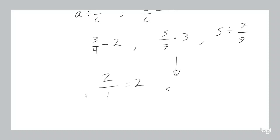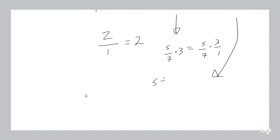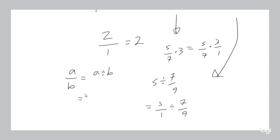So take five over seven times three — that's just five over seven times three over one. How about five divided by seven over nine? That's just five over one, divided by seven over nine. With that second trick, and what we talked about before, you can do any operation with any fraction you want. The key is remembering that any fraction A over B is just division, and any division is just the first number multiplied by one over the second number.